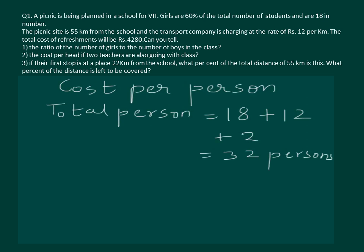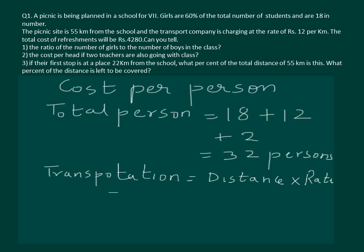Now let's calculate the transportation charges for the trip. Transportation charges equal distance both ways multiplied by the rate. The distance is 55 km multiplied by 2 for both ways, times 12, which is the rate. That gives 110 multiplied by 12, which is equal to 1,320 rupees.